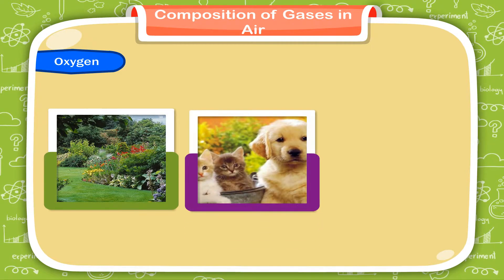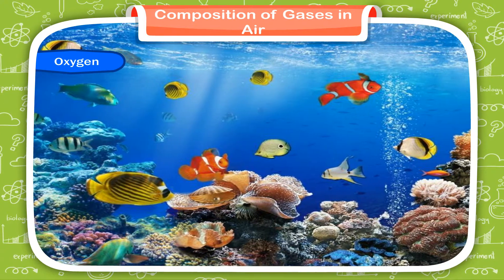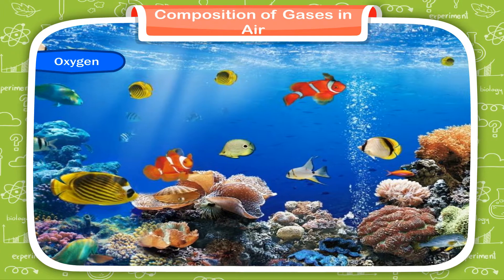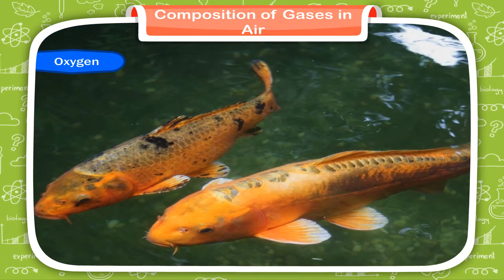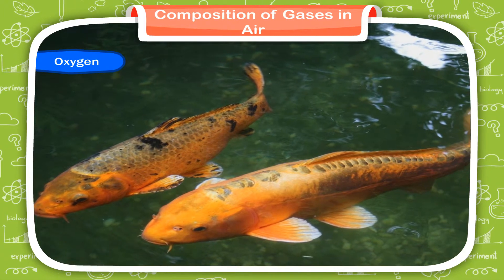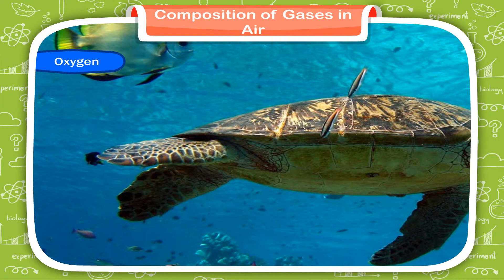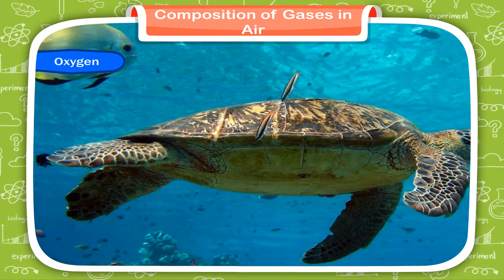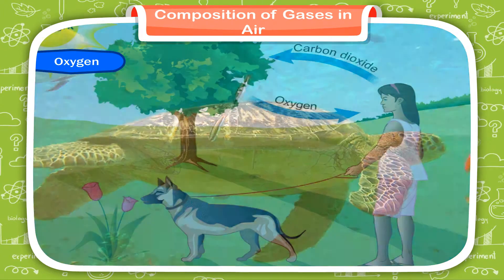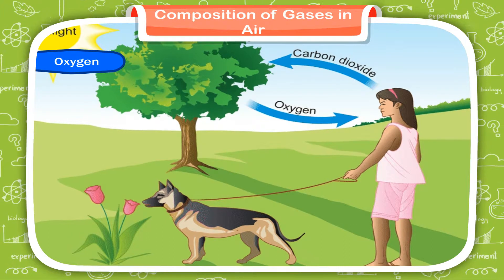Oxygen. We inhale air. All plants, animals and human beings breathe in oxygen present in air. Even plants and animals living in water use oxygen dissolved in water. Fish take in oxygen dissolved in water through their gills. Animals living in water use the air dissolved in water. Aquatic animals use this air to survive.